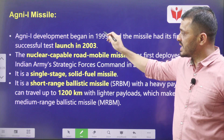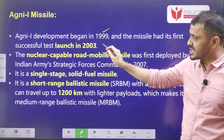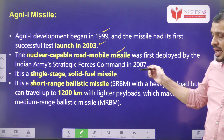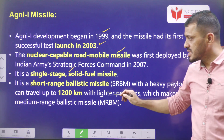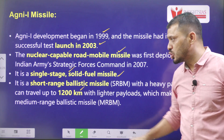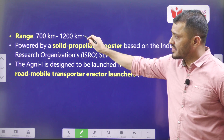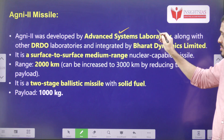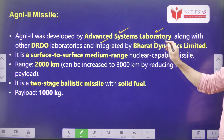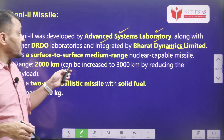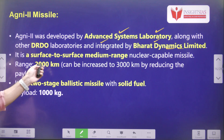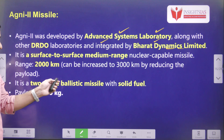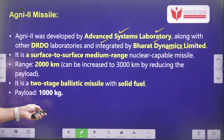Agni-1 missile development started in 1999 and was first tested in 2003. It is nuclear capable and can be launched from a moving vehicle — road mobile. It uses solid fuel and can travel up to 1200 kilometers with a lighter payload; the normal range is 700 to 1200 kilometers. Agni-2 was developed by the Advanced System Laboratory along with DRDO and integrated by Bharat Dynamics Limited. It is a surface-to-surface medium-range missile with a range of 2000 kilometers, and up to 3000 kilometers with a lighter payload. It is also a two-stage ballistic missile using solid fuel, and can carry a payload of up to 1000 kg.